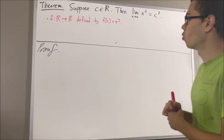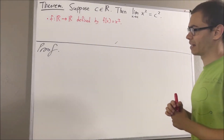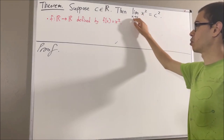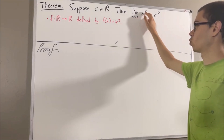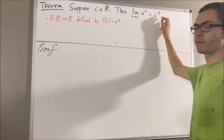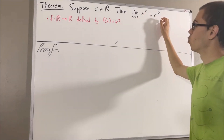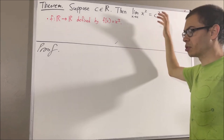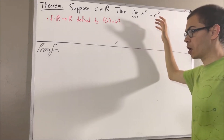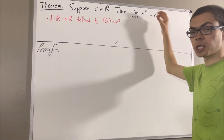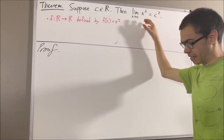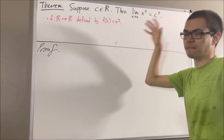What does it mean for the limit as x approaches c of x squared to equal c squared? If you recall from the epsilon-delta definition of the limit of a function, what this means is the following.